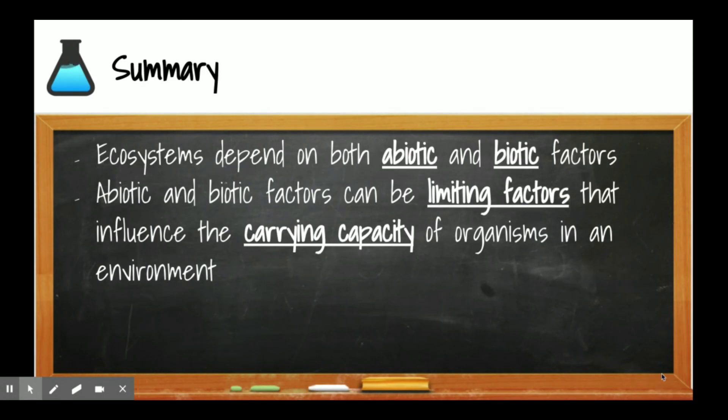The big ideas are that ecosystems depend on both abiotic, non-living, and biotic living factors. Abiotic and biotic factors can be limiting factors that influence the carrying capacity of organisms in an environment. Competition for these resources will help us determine what the carrying capacity is for the environment. Make sure you've taken good notes, complete your homework on Google Classroom, and we'll see you soon.